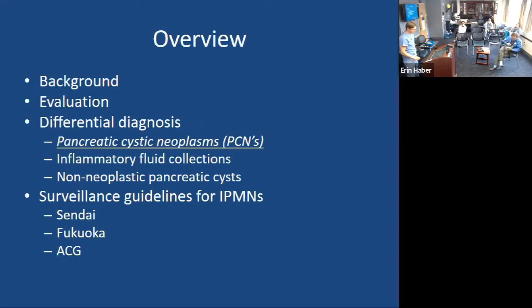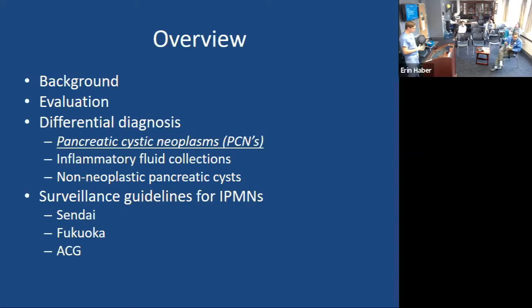A quick overview: we'll talk about the background, the initial evaluation, and what questions you need to ask to figure out with the greatest specificity what you're dealing with. We'll go over the differential diagnosis with a focus on pancreatic cystic neoplasms, which do have a pre-malignant, pre-cancerous risk. Surgery may be an option, so we need to figure out who is at risk for that transformation and who would require surgery. We'll also talk about surveillance guidelines for IPMNs, the most common type of pancreatic cystic neoplasm.